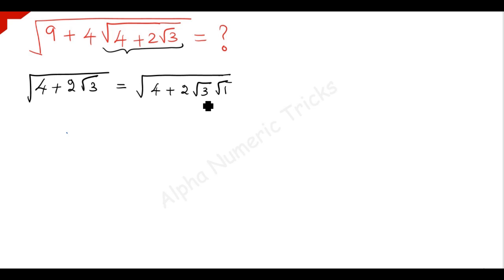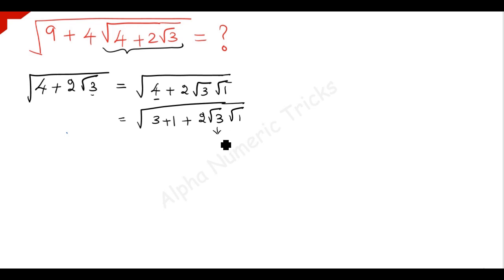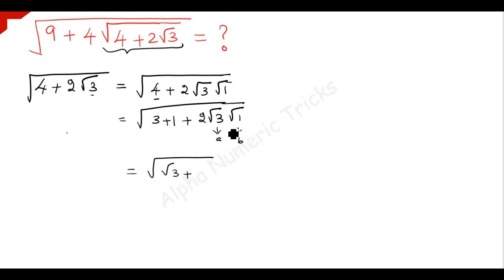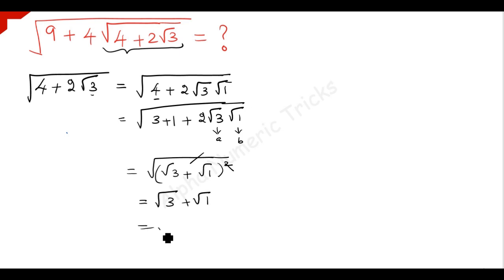Here, 2ab means a is root 3 and b is root 1, so the 4 can be written as 3 plus 1. So we write this as 3 plus 1 plus 2 times root 3 times root 1. Here a equals root 3, b equals root 1, a squared is 3 and b squared is 1. So square root of this is root 3 plus root 1, and since root 1 equals 1, the answer is root 3 plus 1.